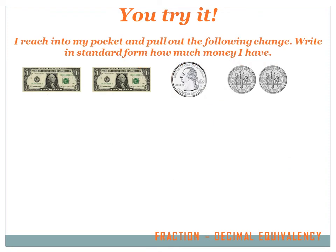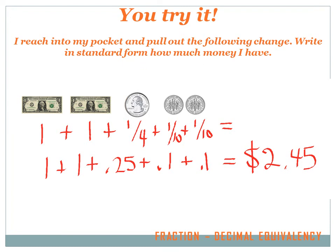I reach into my pocket and pull out the following change. Write in standard form how much money I have. Well, let's see how much money we've got. We've got one dollar, one whole dollar. We've got a second whole dollar. We've also got a quarter. That's a quarter of a dollar. So I've got one quarter of a whole dollar. And then I've got a couple of dimes. Each of those dimes is one tenth of a dollar. There are ten dimes to a dollar. So each dime is one tenth of a dollar. So I've got one tenth plus one tenth.